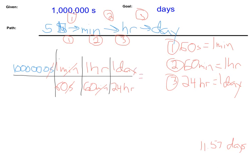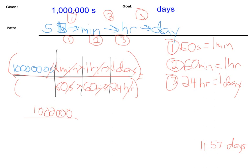Let's go through and see what we get for an answer. Hours on top cancel hours on bottom, so we get days — just like we wanted. This is our first problem where we really have numbers on both top and bottom. We need to take 1,000,000 times 1 times 1 times 1, divided by 60 times 60 times 24. So we have 1,000,000 on top divided by 86,400. When I plug those two numbers into the calculator, we get our answer of 11.57 days.